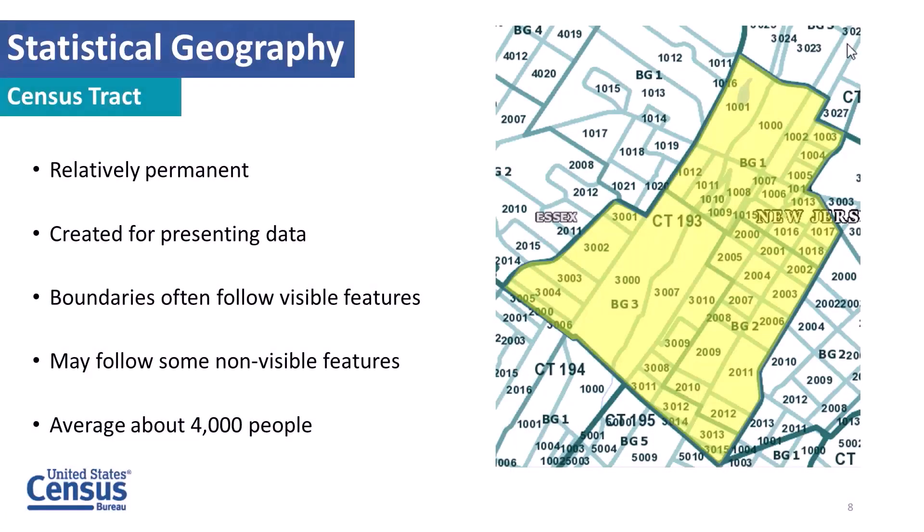We also have the census tract — really the showcase geography that the Census Bureau has developed. We released it nationwide back in 1940. It's very permanent and meant to be used temporally, created for presenting statistical data. Boundaries are often visible features on the ground but could be surveyed boundaries as well. Around the country, there are about 4,000 people in a census tract, making it a very good way to analyze demographic data.